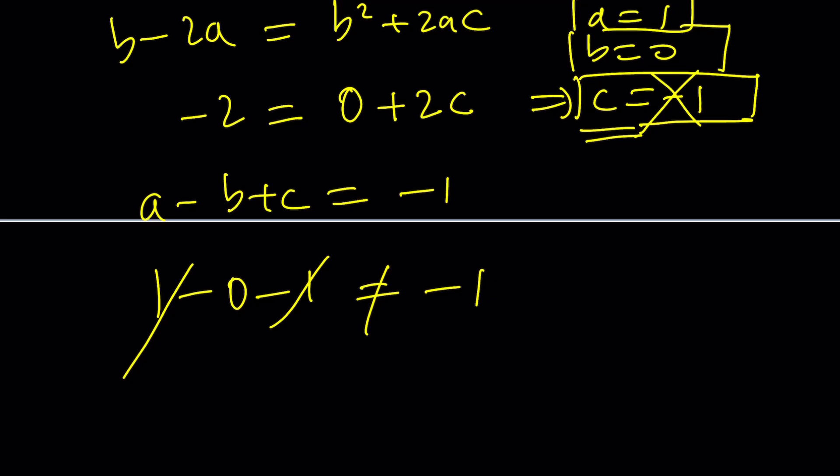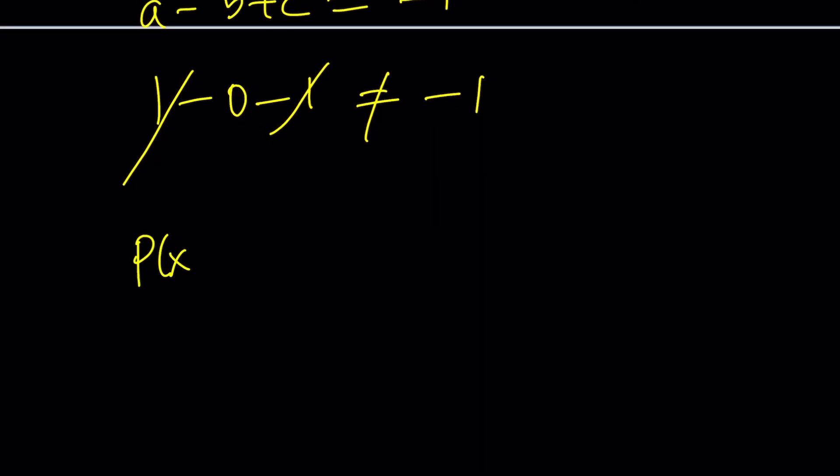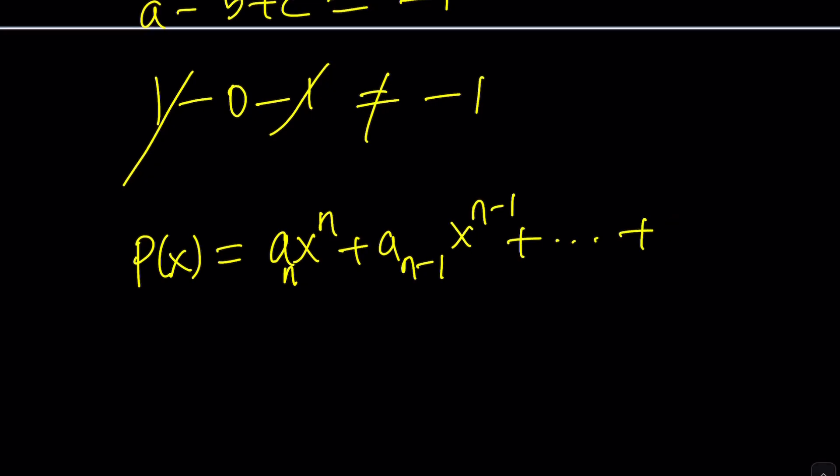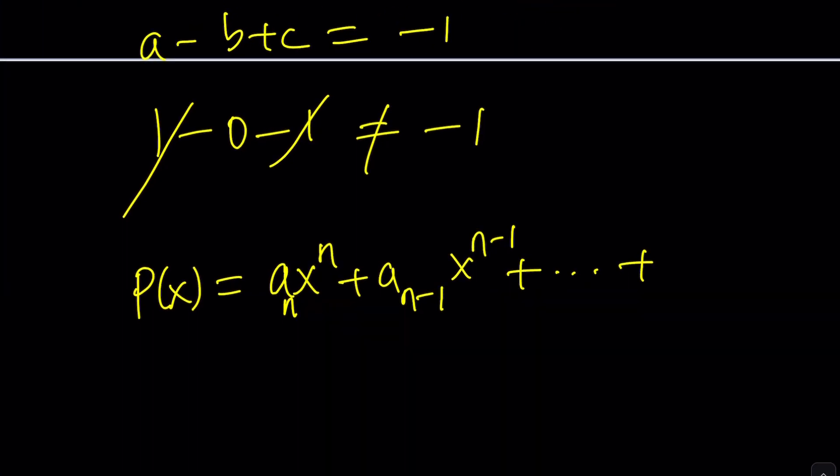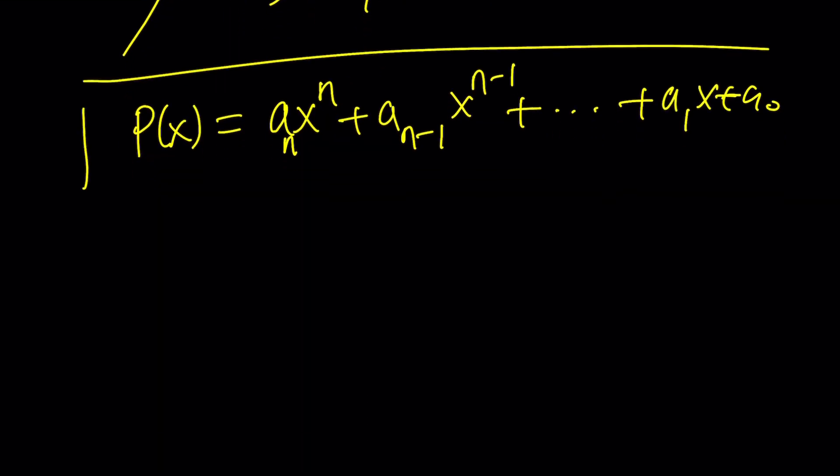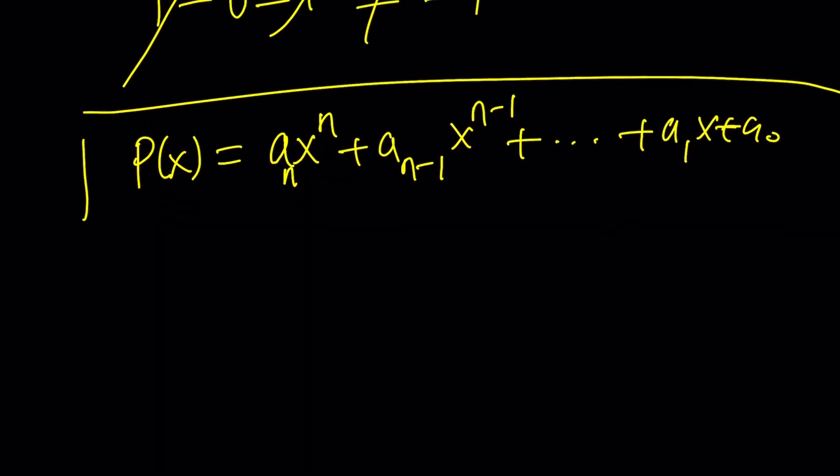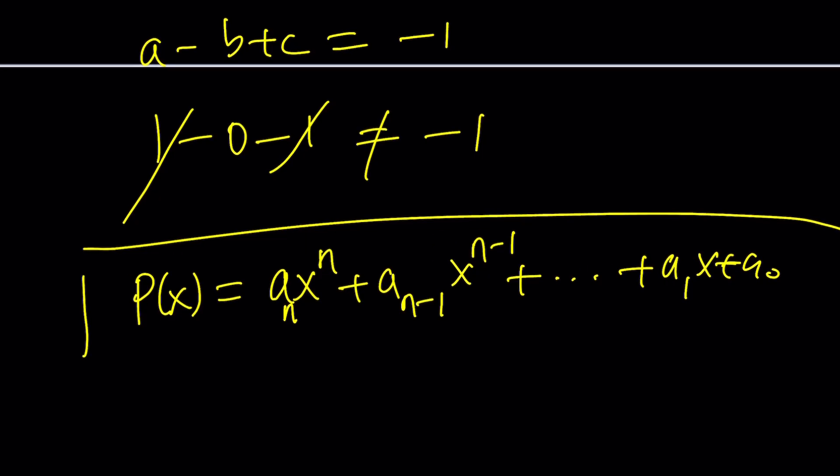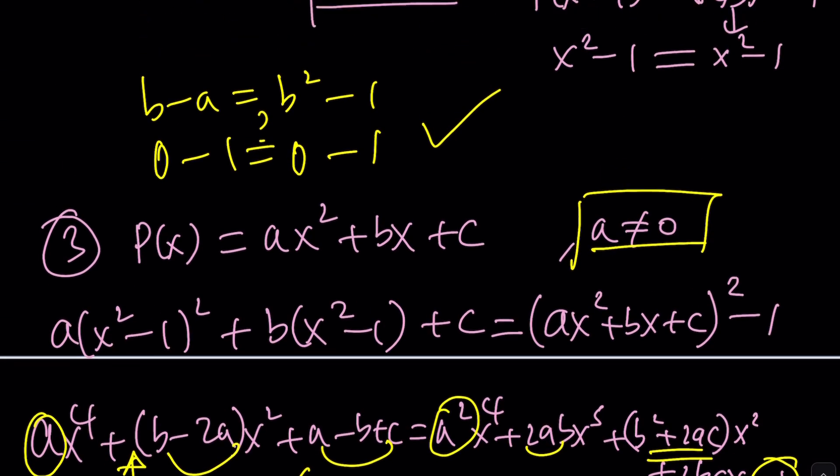What about the cubic? Are we going to try all the cases? No, not really. But you could probably do the following. You could try something like this. a sub n x to the n, a sub n minus 1 x to the n minus 1, all the way down to a sub 1 x plus a sub 0. Now plug it into the original equation. That's going to be crazy. And then from there, hopefully you can deduce something. But so far, we have three solutions. p of x equals x and the two constants we just found. Isn't that cool?